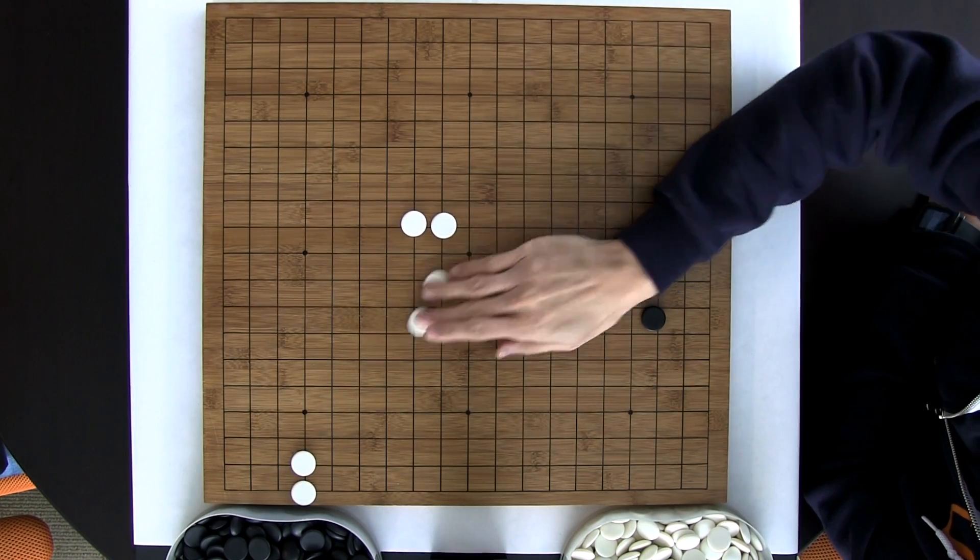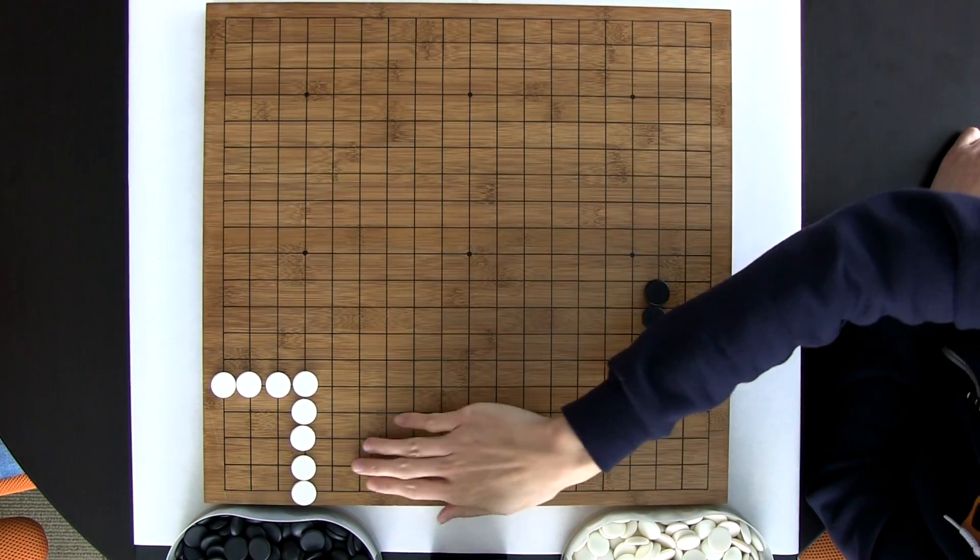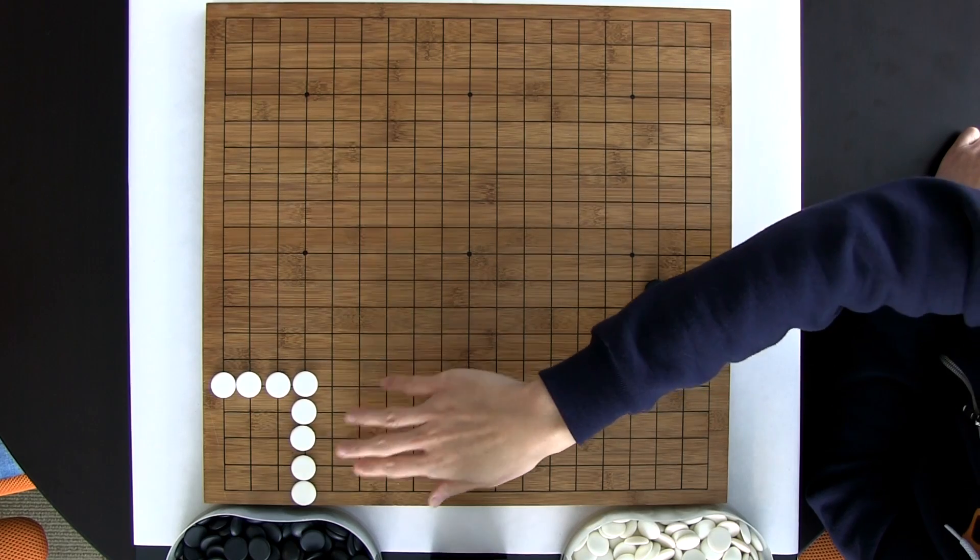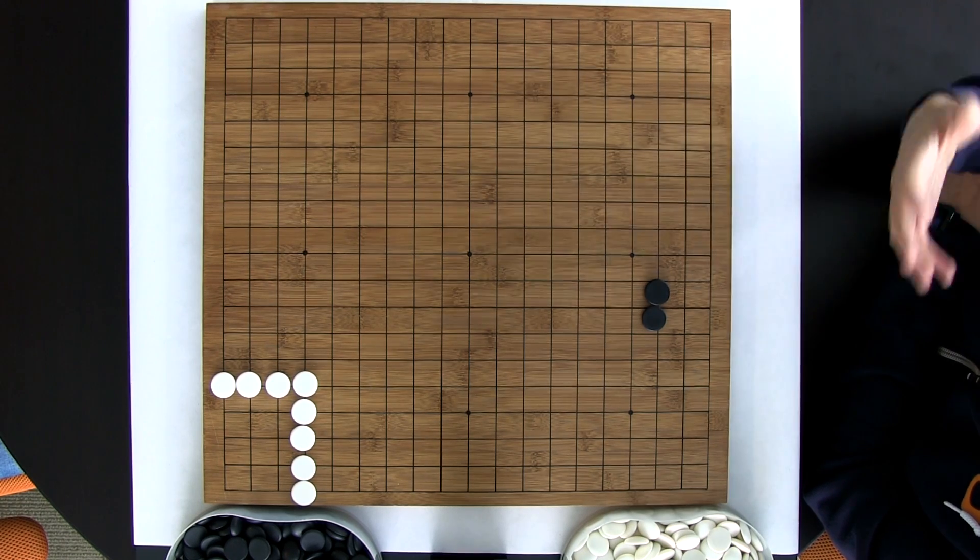So what is this concept of territory? Well, territory is actually the amount of the board that you are holding down. So, for example, we might have an area of the board that looks something like this. Well, in this situation, it's very unlikely that the black player is going to be able to play within this area and be able to make any opportunity of living. This is considered white's territory.